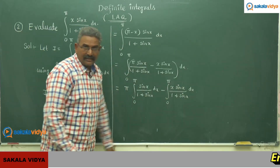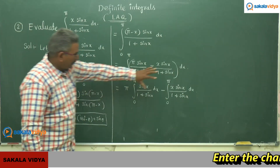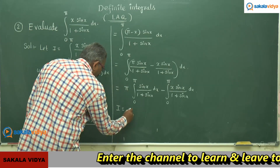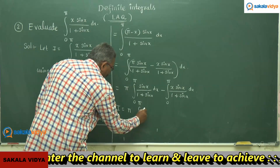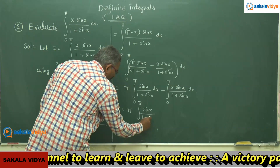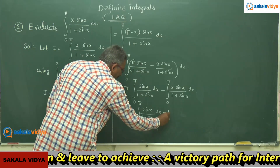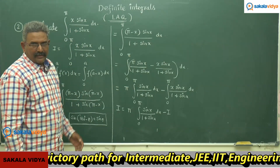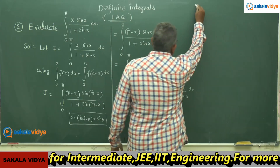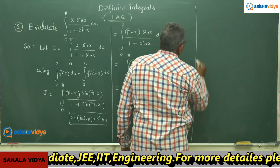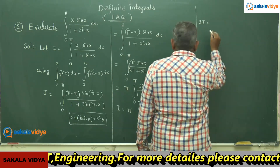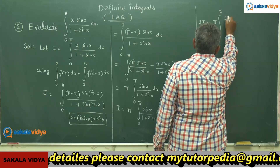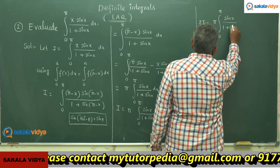In place of the last integral, we substitute I. So I equals π times integral 0 to π of sin x by 1 plus sin x dx, minus I. Transposing minus I to the left-hand side gives plus I, so I plus I equals 2I. Therefore, 2I equals π times integral 0 to π of sin x by 1 plus sin x dx.